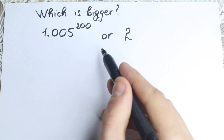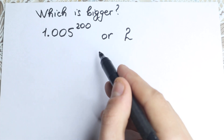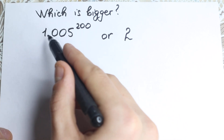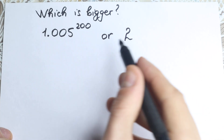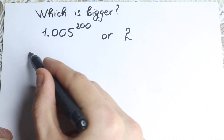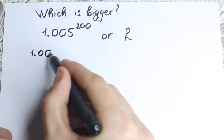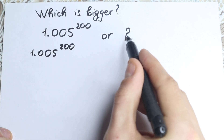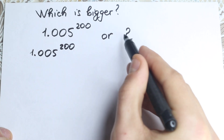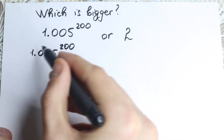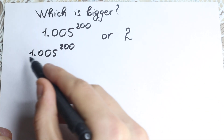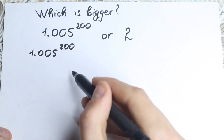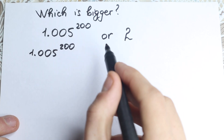In math we are actually interested in tricks, in really quick steps, not in raising to the power 200. So take a look — we have 1.005 to the power 200. On the left hand side we have this decimal number, 1.005 to the power 200. Take a look closely.